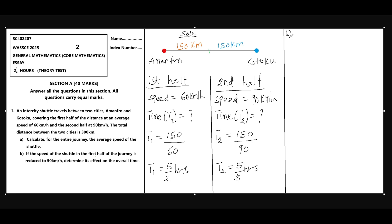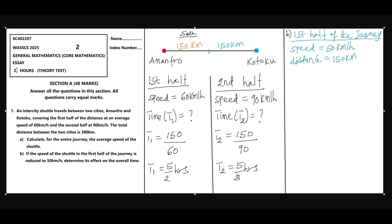For Part B, if the speed of the shuttle in the first half of the journey is reduced to 50 kilometers per hour, we determine its effect on the overall time. In the first half, the speed is no longer 60 kilometers per hour but rather 50 kilometers per hour. The distance remains unchanged at 150 kilometers, so now we calculate the new time.